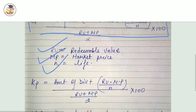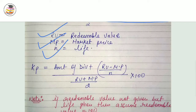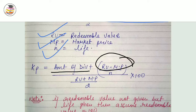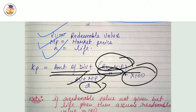Now let's go to the cost of preference share when preference share is of redeemable nature. The formula is: amount of dividend plus redeemable price minus market price, divided by N, whole upon redeemable value plus market price divided by 2, into 100.